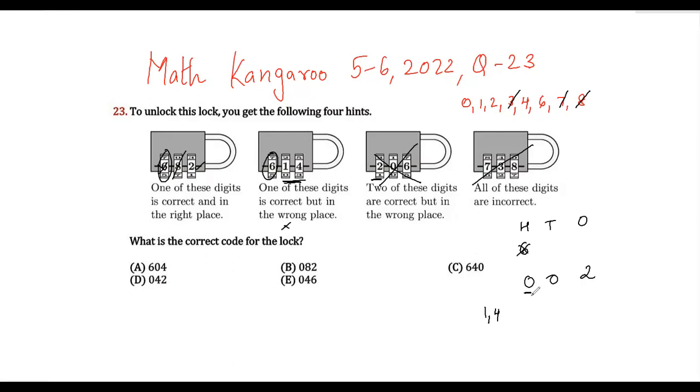Now if you see the options that I have, we have 1 and 4. If you see the options nowhere you can find a 1. So that means 1 is also not a part of the answer. You can straight away eliminate it. So now the digits that I have is 0 and 4.